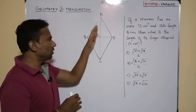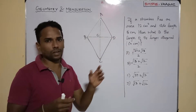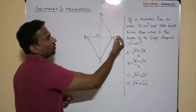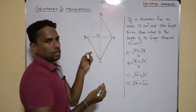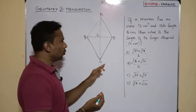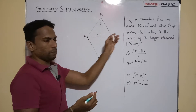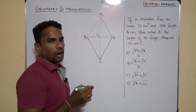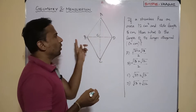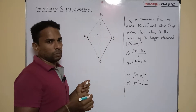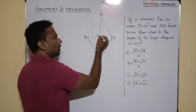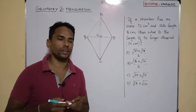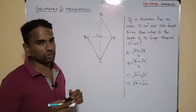The diagonals will be meeting at right angles. I have named the vertices as A, B, C, and D, and taken the two diagonals as AC and BD. O is the intersecting point, and these two diagonals meet at right angles — they are perpendicular. This angle will be 90 degrees.